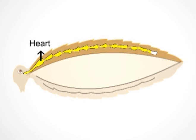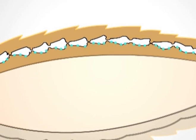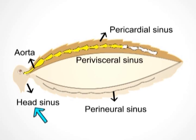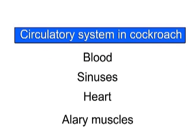The heart of cockroach is present in the pericardial sinus and consists of 13 chambers. Blood flows from the posterior chamber to the preceding chamber — from the 13th to the 12th, 12th to 11th, and so on. They have lateral pores called ostia which open into the pericardial sinus. The first chamber opens into the head sinus through an aorta, and the perivisceral sinus collects blood from the head sinus.